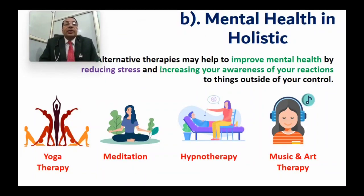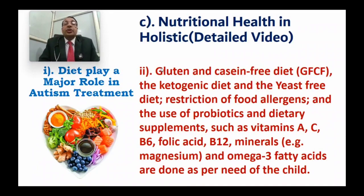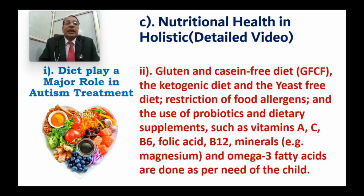For mental health in holistic treatment, alternative therapies may help improve mental health, reduce stress, and increase awareness of the child's reactions. These may include yoga therapy, meditation, hypnotherapy, music and art therapy. For nutritional health — which plays a very important role — options include gluten-free or casein-free diet, ketogenic diet, yeast-free diet, restriction of food allergens, use of probiotics, and dietary supplements like vitamins A, C, B6, folic acid, B12, minerals, magnesium, and omega-3 fatty acids as per the child's need.